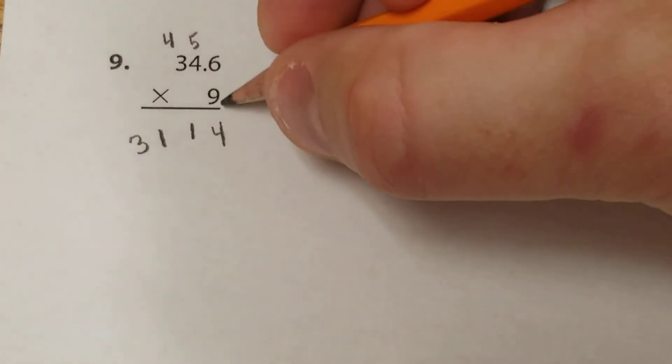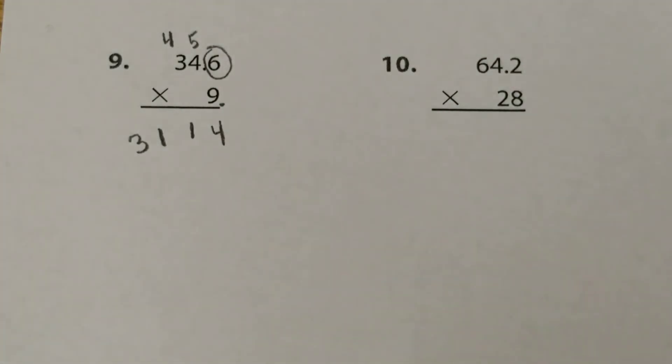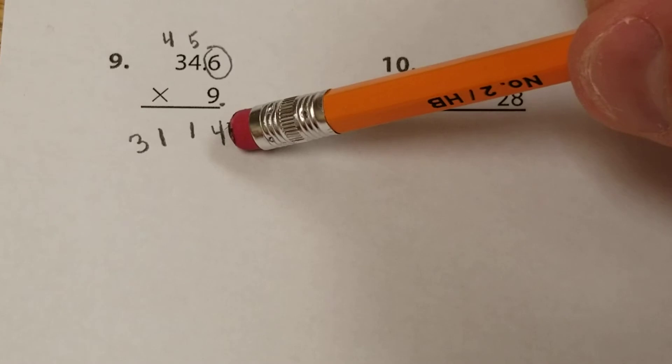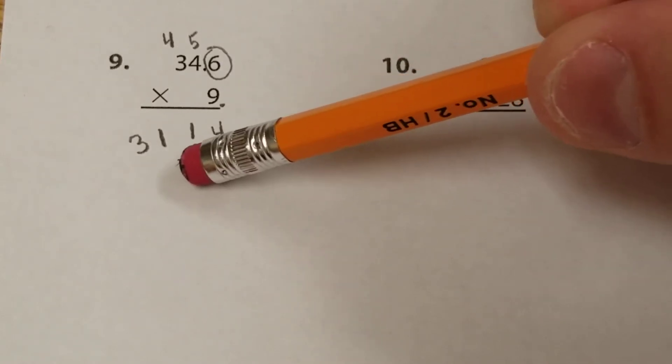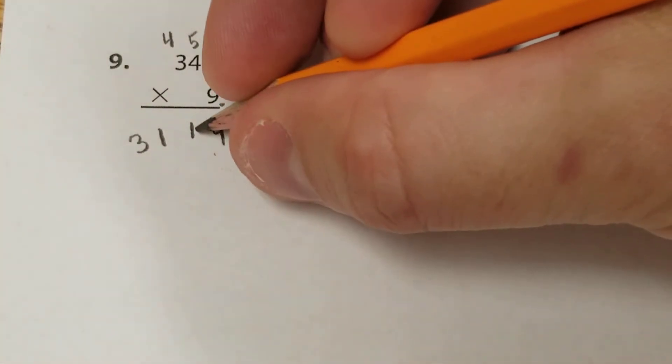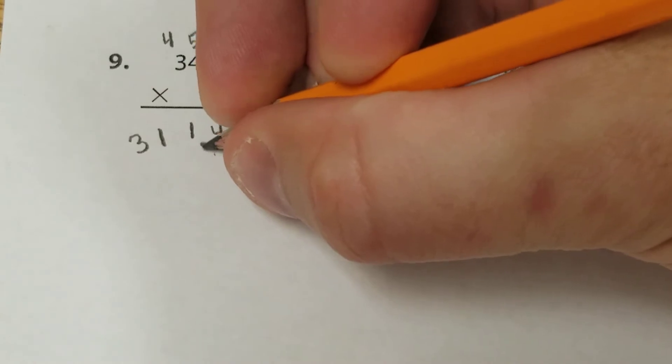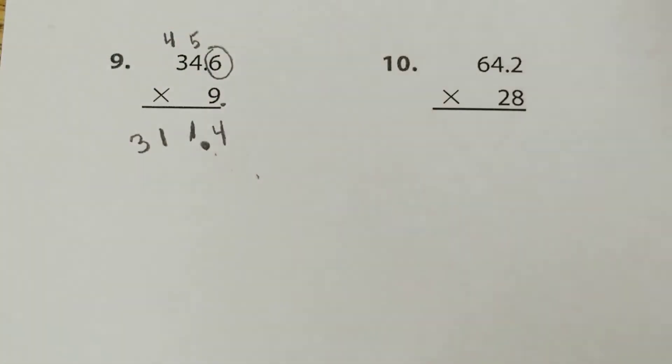This one only has one decimal. Actually it has two, one here, but there's nothing after it. So I'm going to circle that which is one spot. Then all you do is you go over to the end of your number. You start there, pretend it's a whole number, the decimal is at the end, and you just move it to the left one spot. So when I move this over here, it's going to be between the 1 and the 4. And our answer is 311.4.